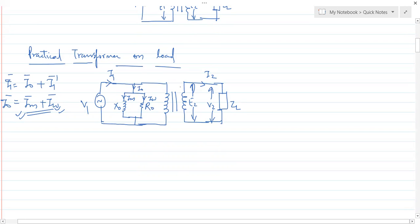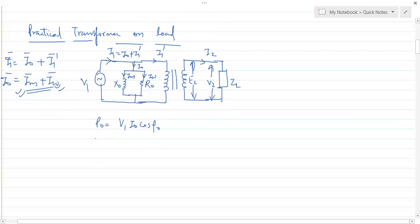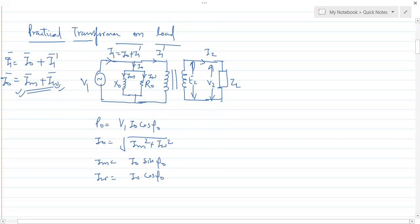This reactance is called the no-load reactive component and this resistance is called the no-load resistive component. The current through the resistance is IW and through the reactance is IM. Their phasor sum equals I0. No load power is equal to V1·I0·cos(φ0). The no-load current I0 equals √(IM² + IW²), where IM = I0·sin(φ0) and IW = I0·cos(φ0).